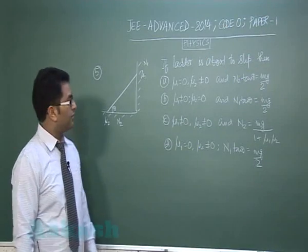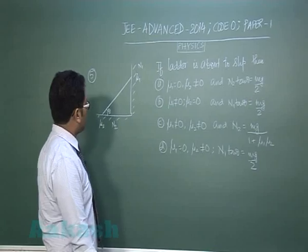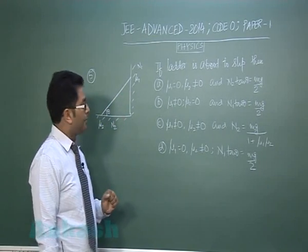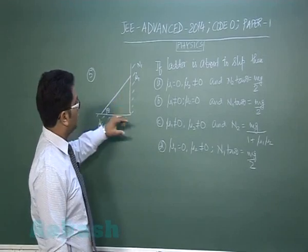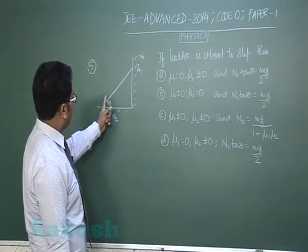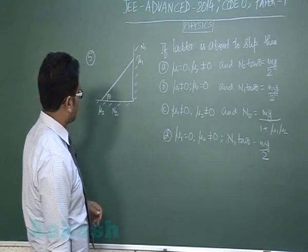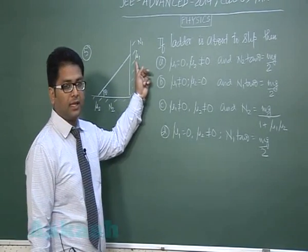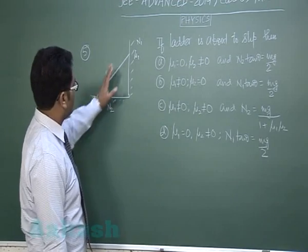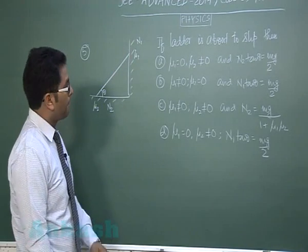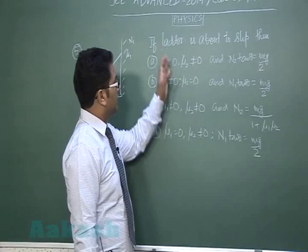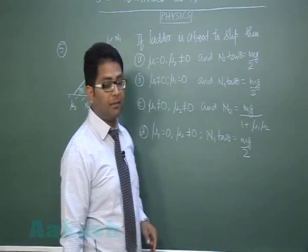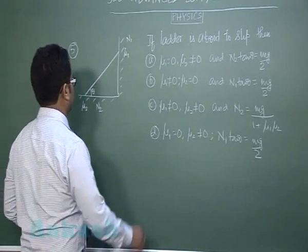Okay, question number five, it's from rotational motion and the ladder problem. There is a ladder of mass m and at an angle theta with the horizontal, coefficient friction here is mu2, here is mu1, and then the normal reaction here is n2 and here n1. And the question says if the ladder is about to slip, that means limiting friction acts everywhere.